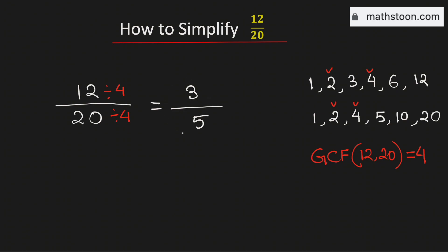And see that 3 over 5 is simplified. So we can say that 3 over 5 is the simplified reduced form of the fraction 12 over 20. And this is our final answer.